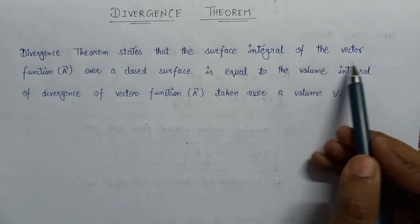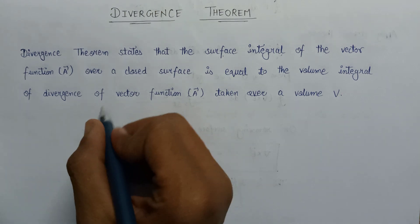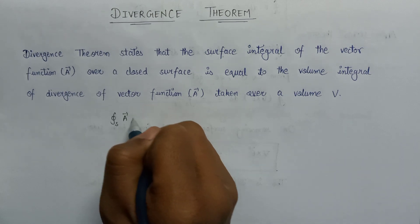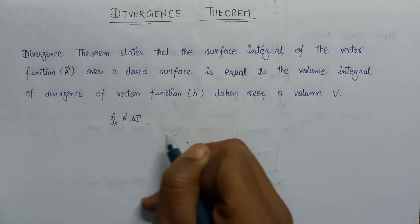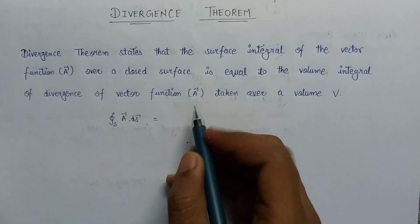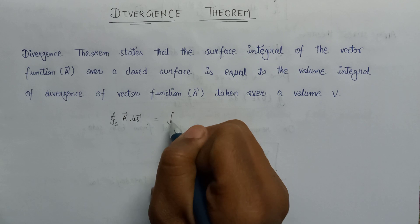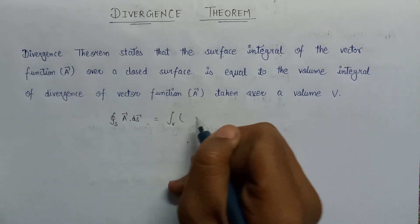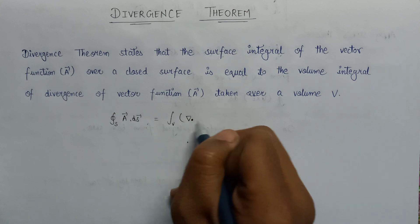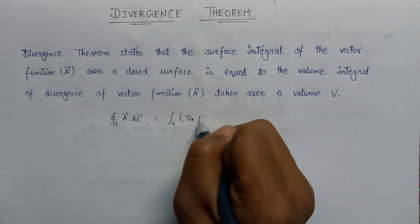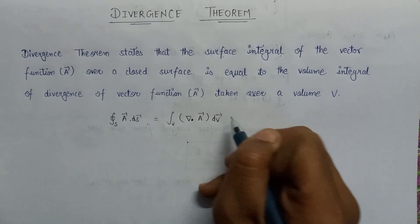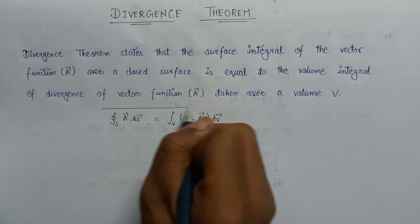First of all, it is saying that the surface integral of vector function over a closed surface. So here is the surface integral over a closed surface of vector function A vector, which is equal to the volume integral of the divergence of vector function over the closed volume V. Here, the del dot represents the divergence of A vector taken over a volume V. This is the mathematical expression for divergence theorem.